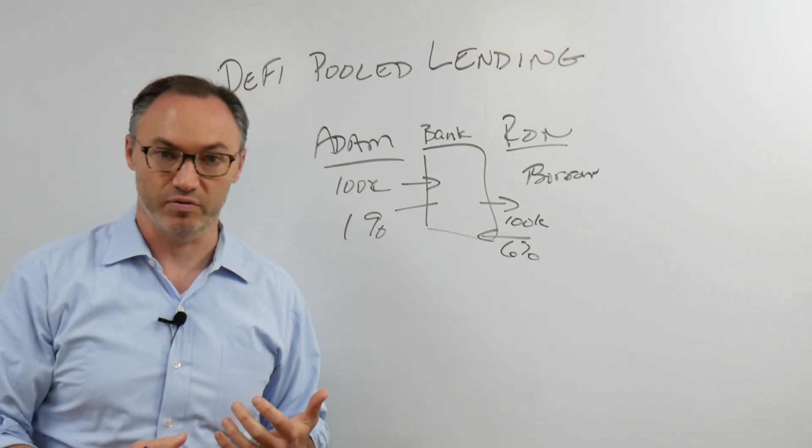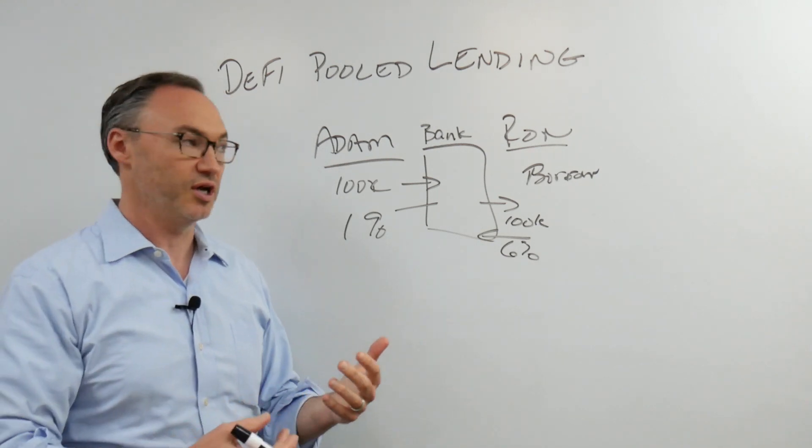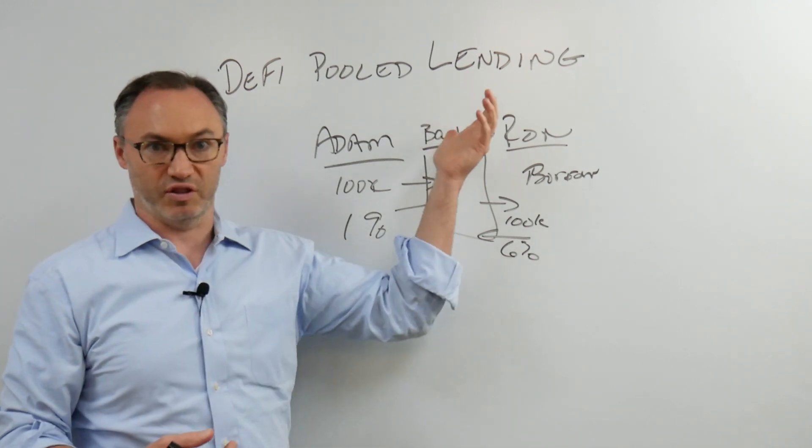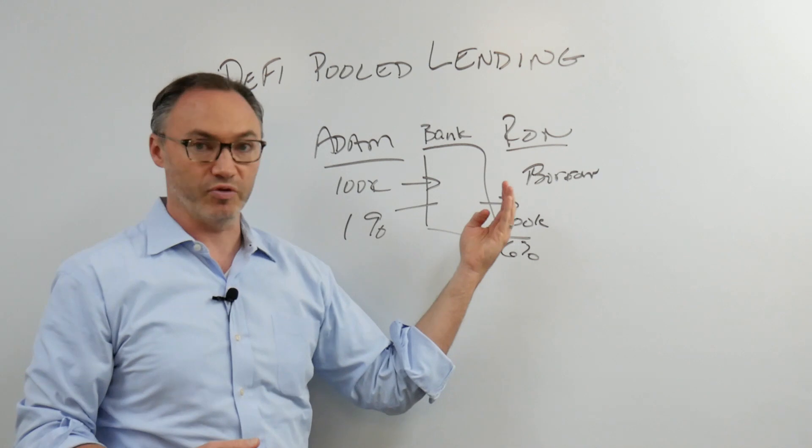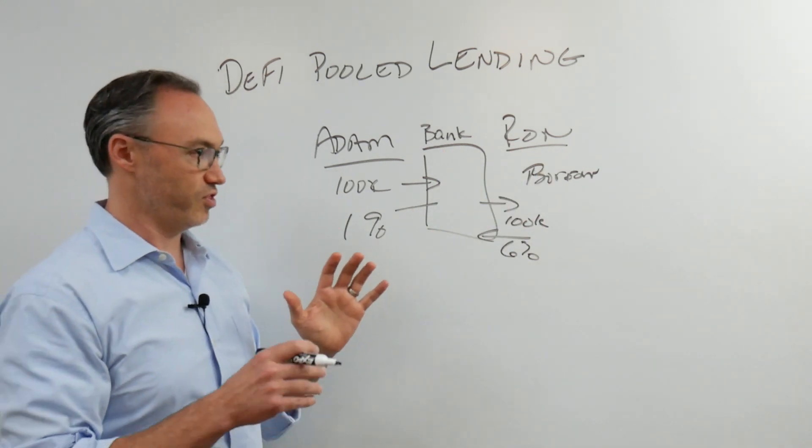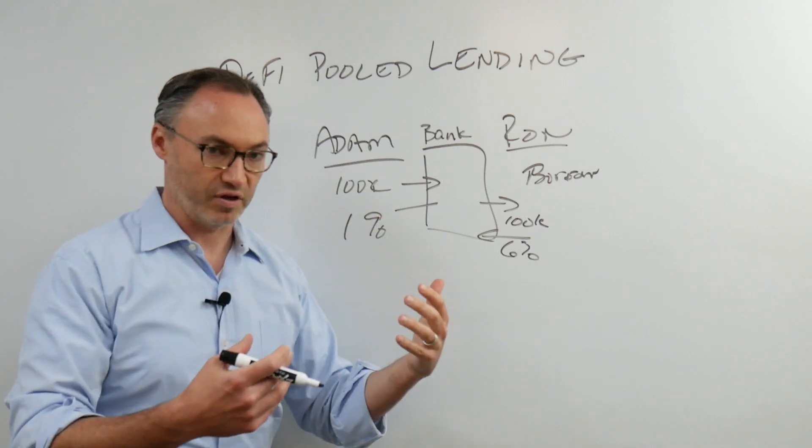Of course, in the U.S., with the Federal Deposit Insurance Corporation, up to $250,000 of my money is actually insured by the federal government. So even if the bank runs out of money, if all these people don't pay back, I will still get my money up to an amount.